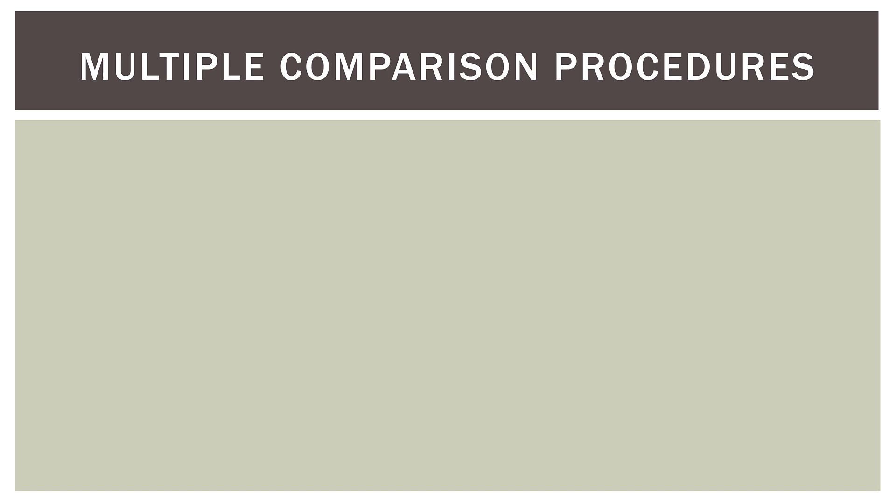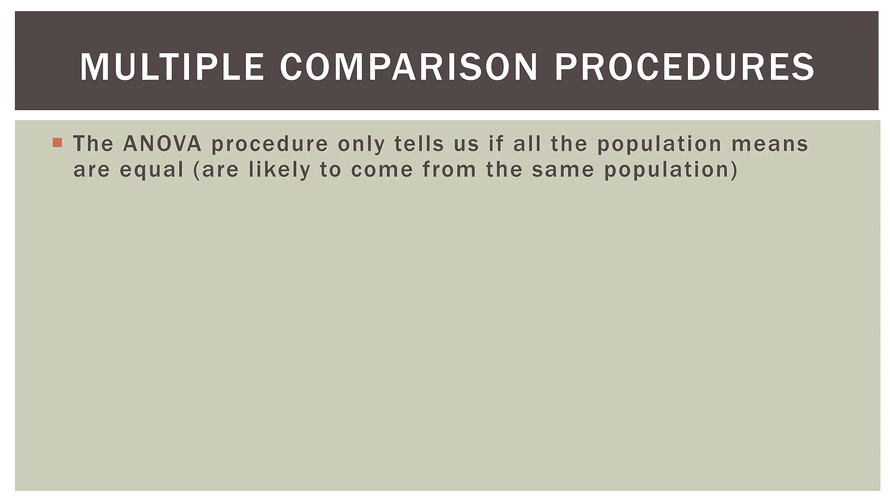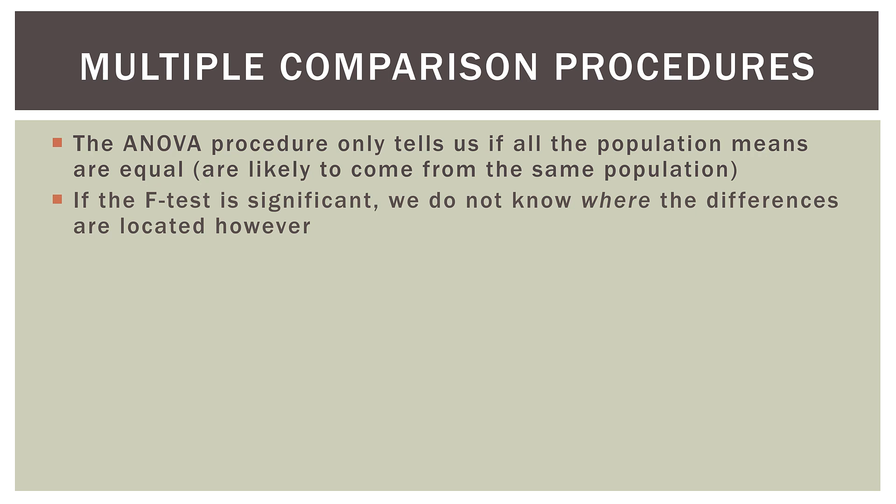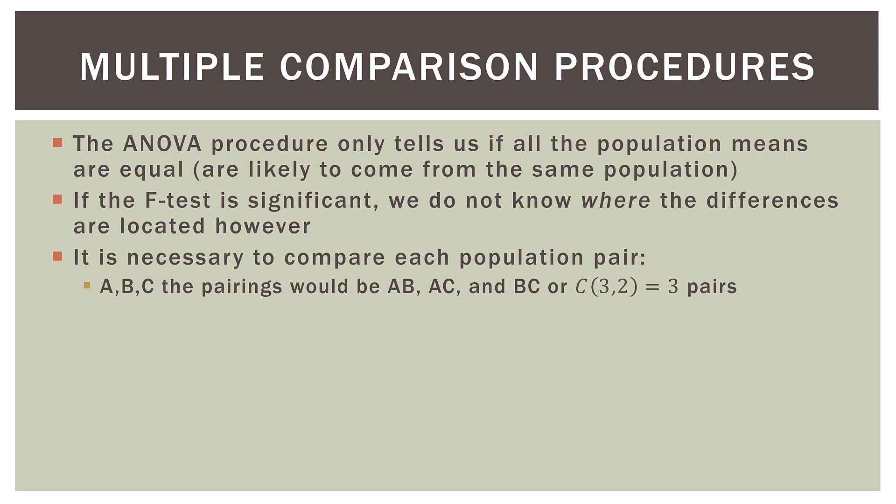Here are multiple comparison procedures. The ANOVA procedure only tells us if all the population means are equal or likely come from the same population. If the F-test in the ANOVA is significant, we do not know where the differences are located. It is necessary to compare each population pair — what we call post hoc, or after the fact. For example, if we have three groups A, B, and C, the pairings would be A and B, A and C, and B and C — that is three-choose-two, or three pairs.